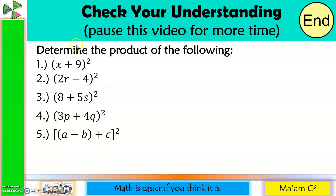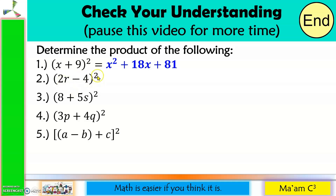Let us answer number 1. Square x to get x squared. Copy the sign. First term is x, second term is 9: x times 9 is 9x, times 2 is 18x. Then 9 squared is 81, and the third term is always positive — plus 81. Number 2: 2 squared is 4, r squared is r squared, so 4r squared. Copy the sign. 2r times 4 is 8r, times 2 is 16r. 4 squared is 16, third term always positive — plus 16.